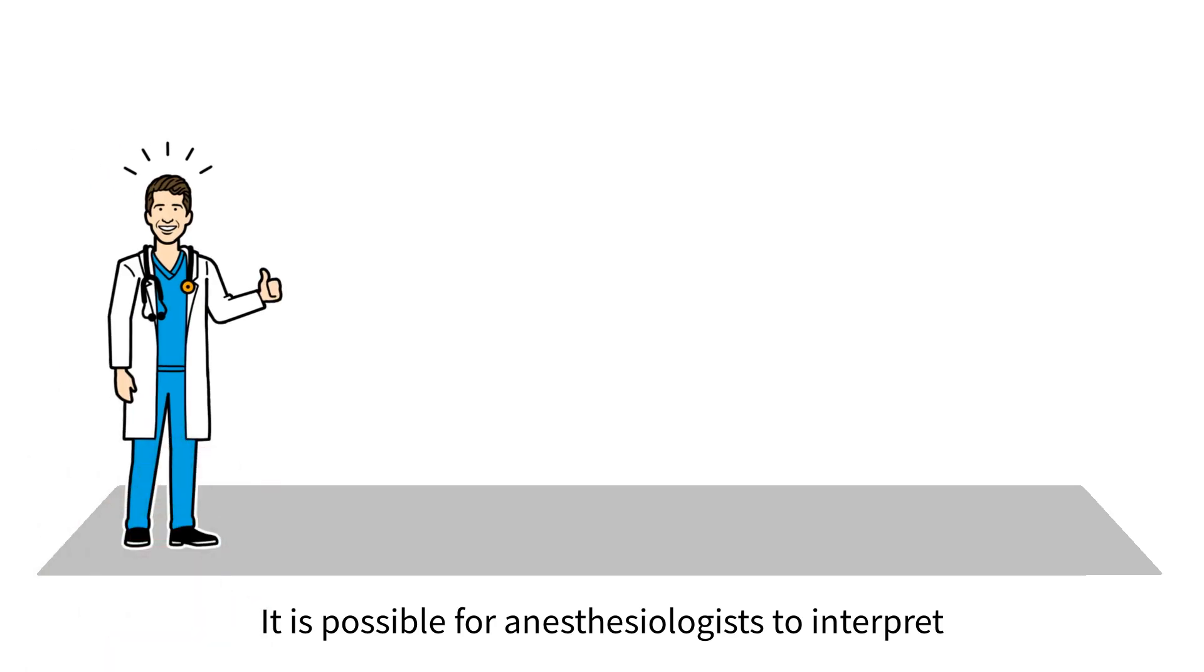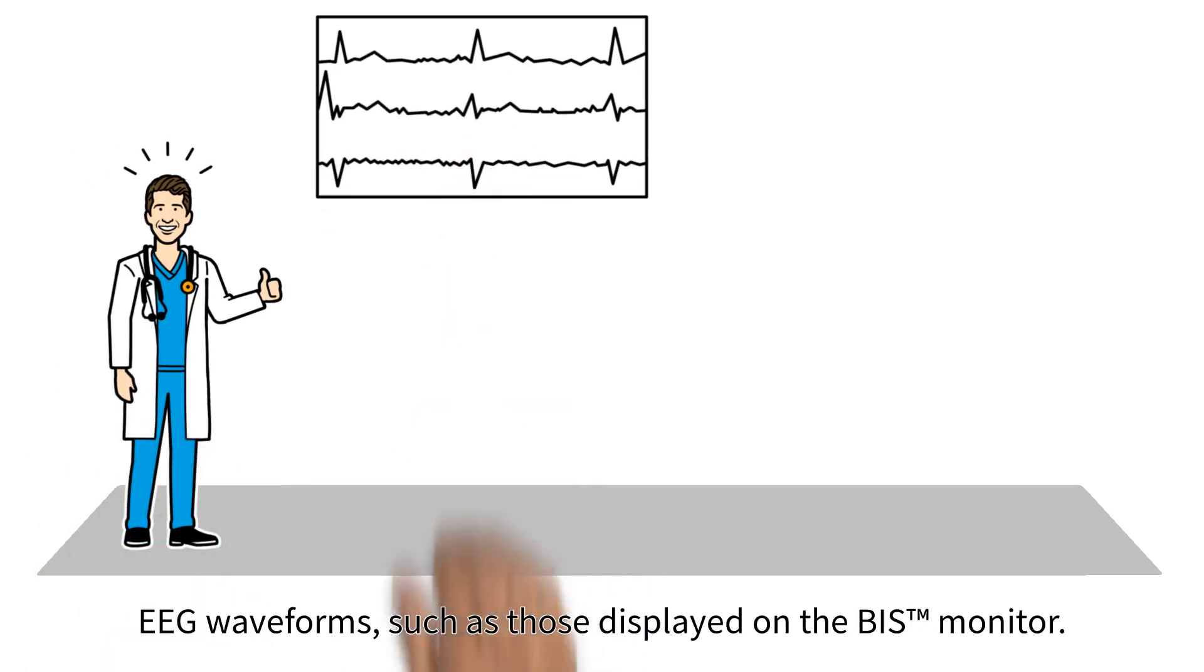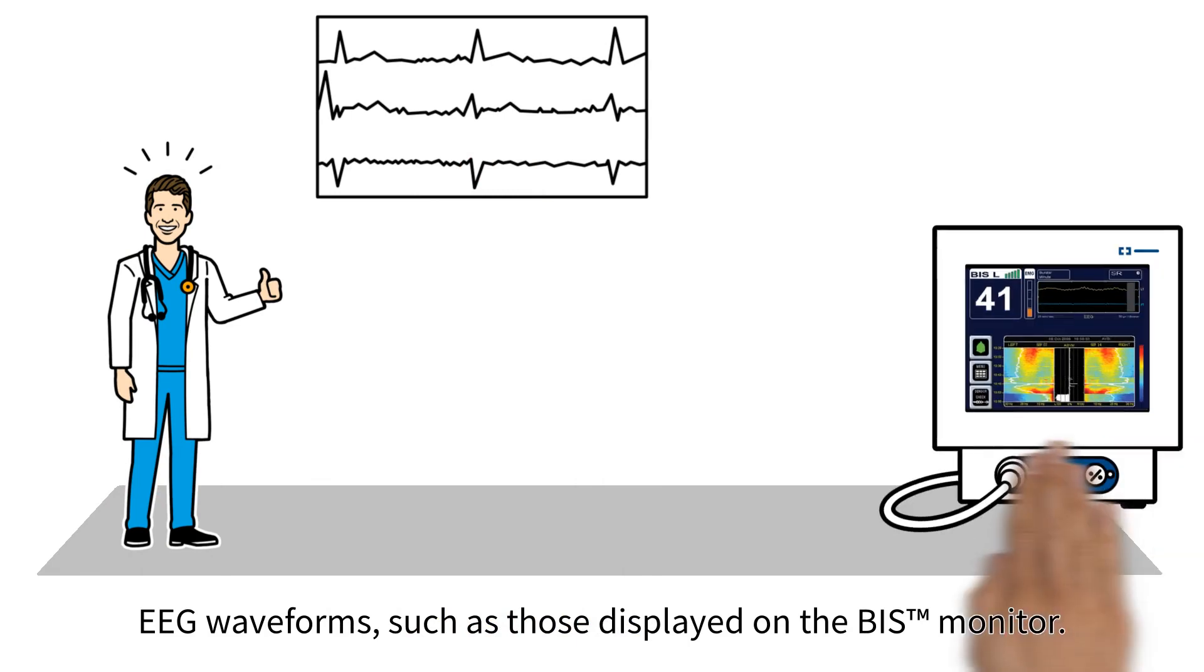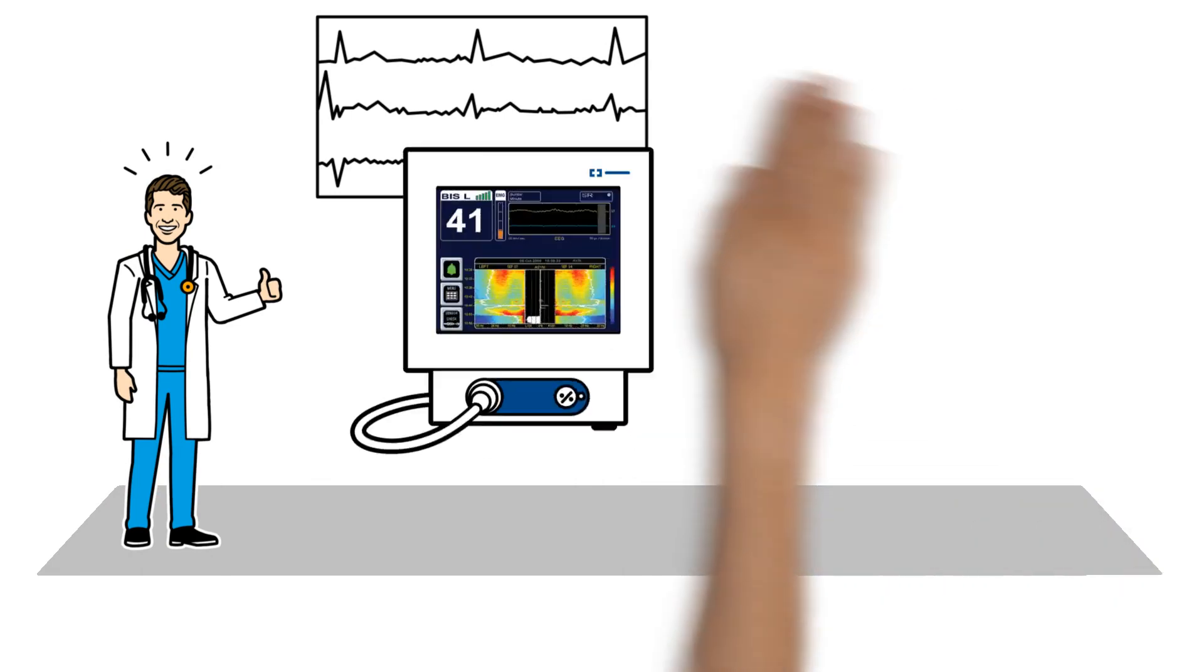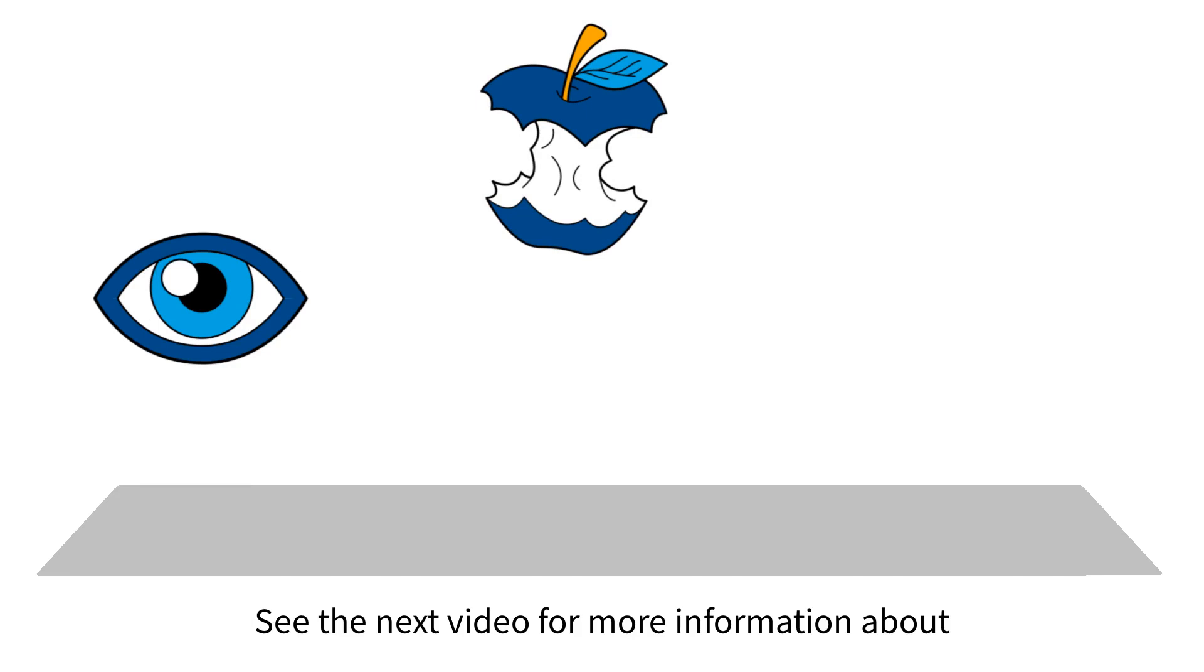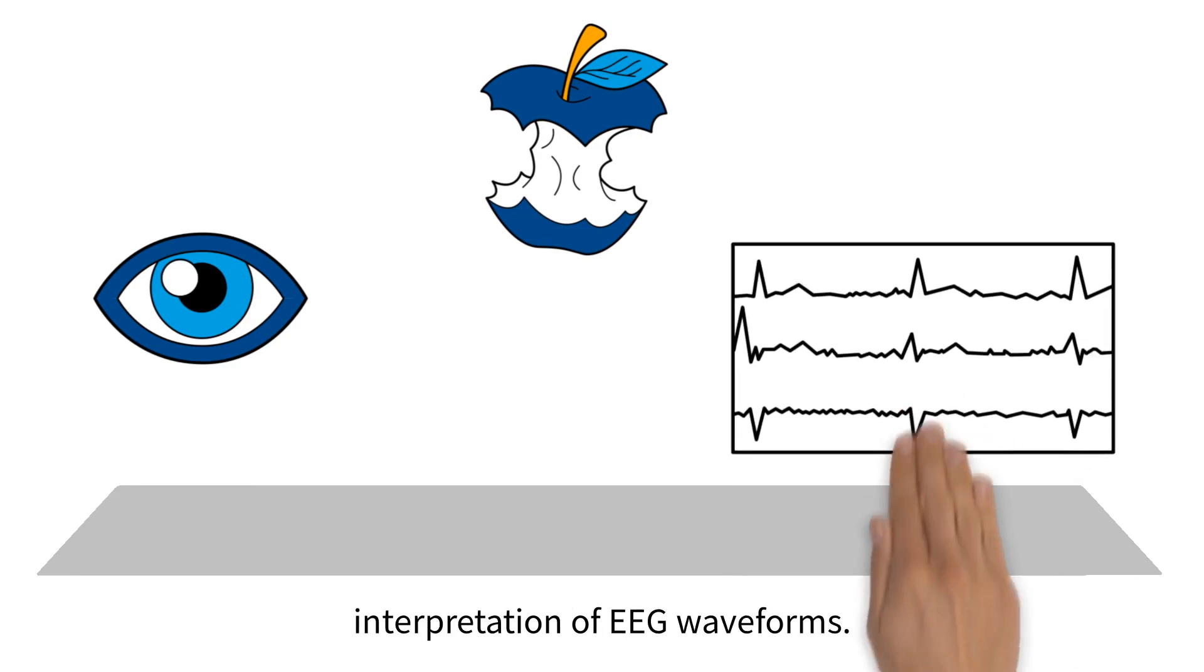It is possible for anesthesiologists to interpret EEG waveforms, such as those displayed on the Bis Monitor. See the next video for more information about interpretation of EEG waveforms.